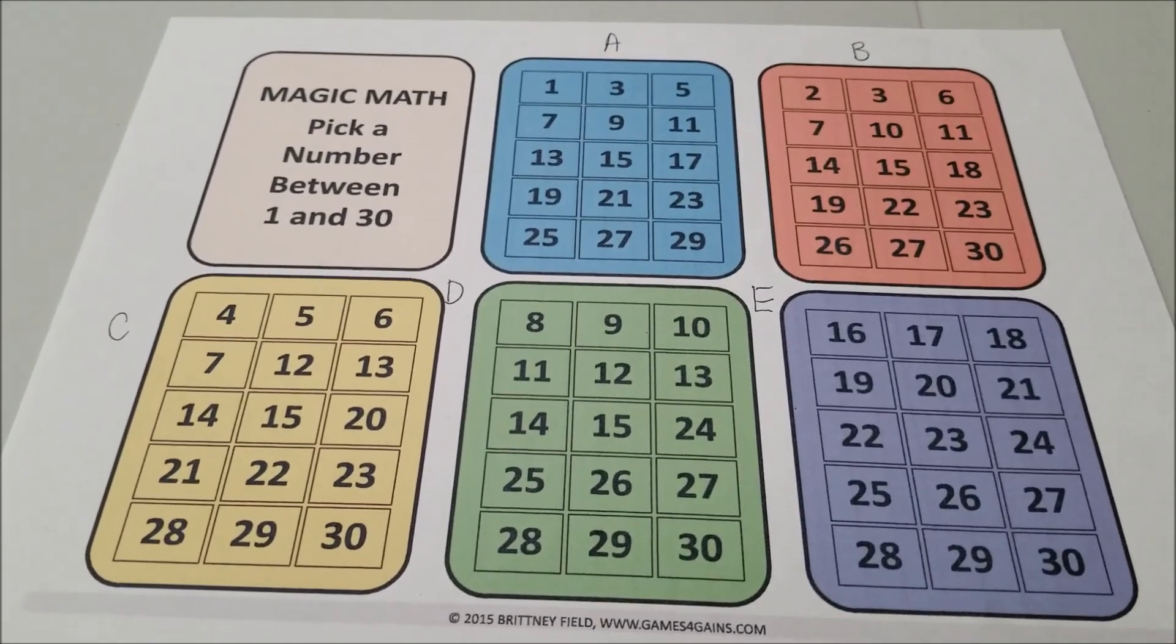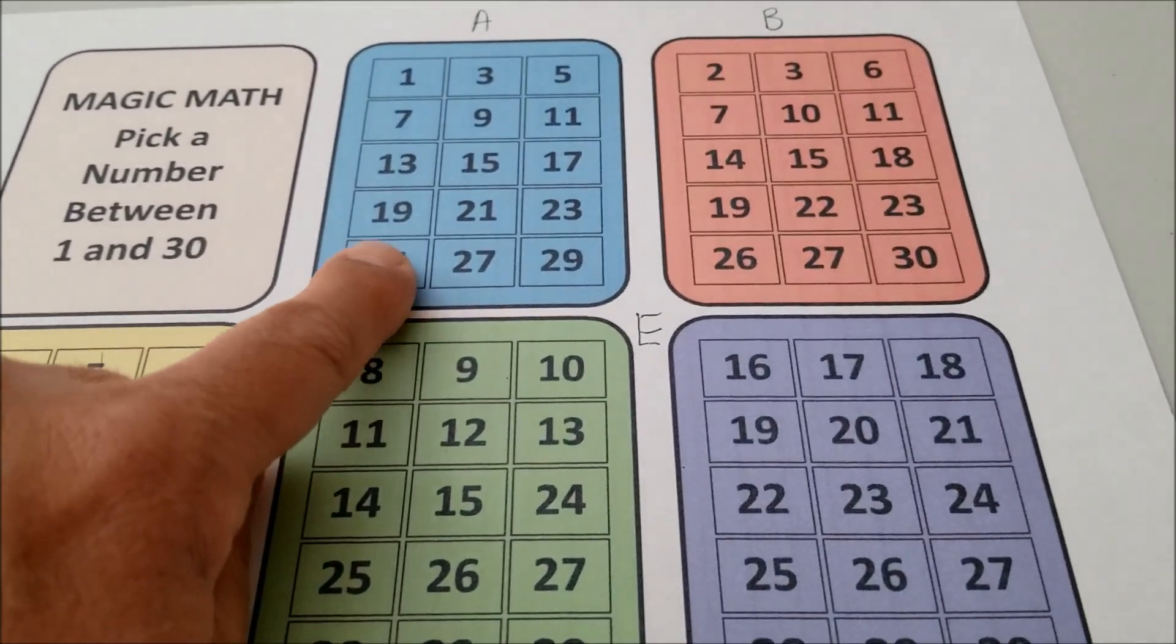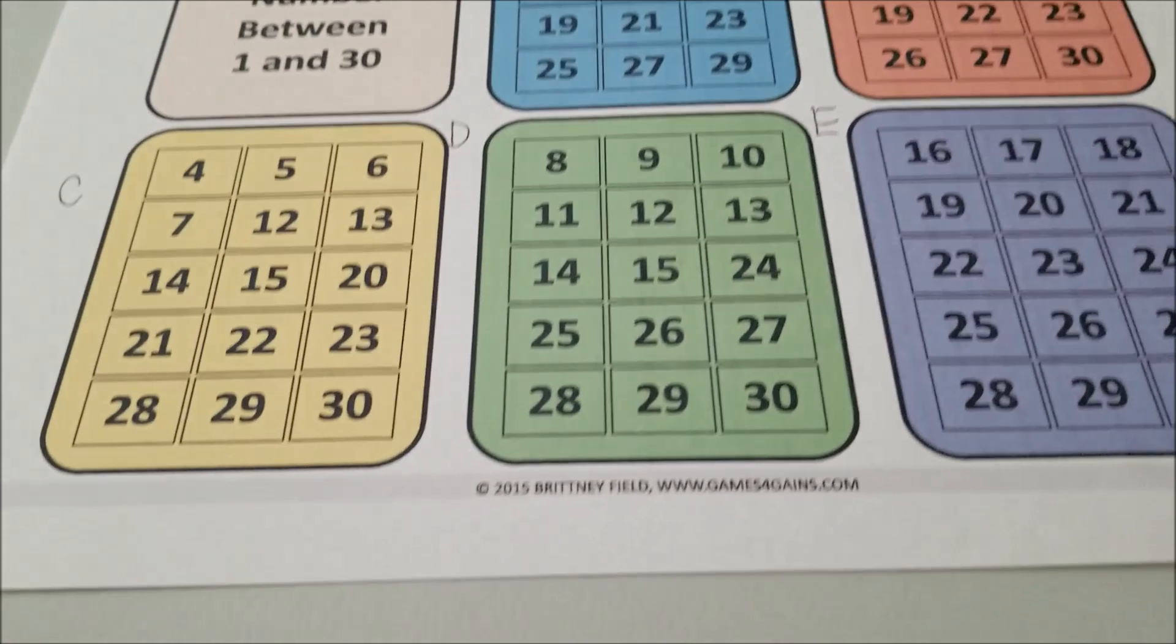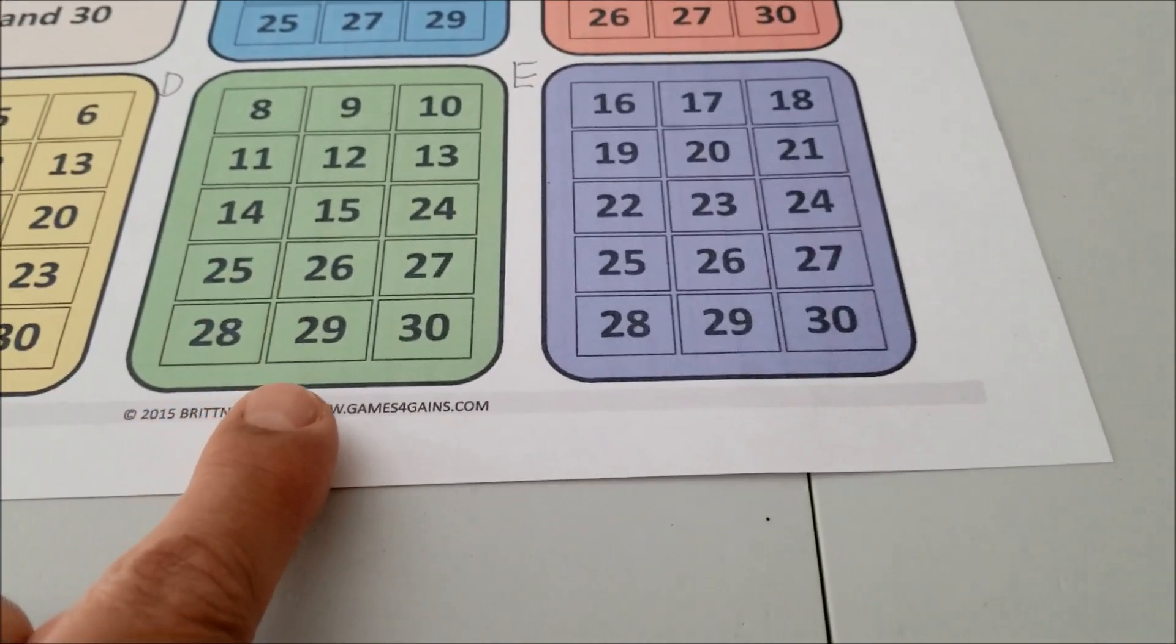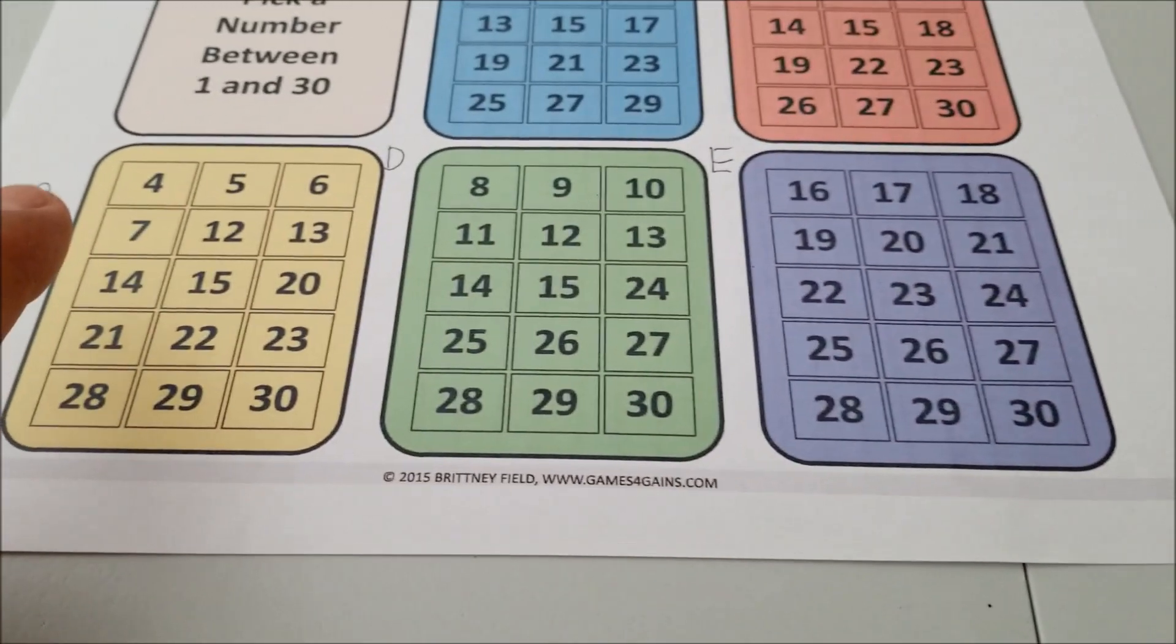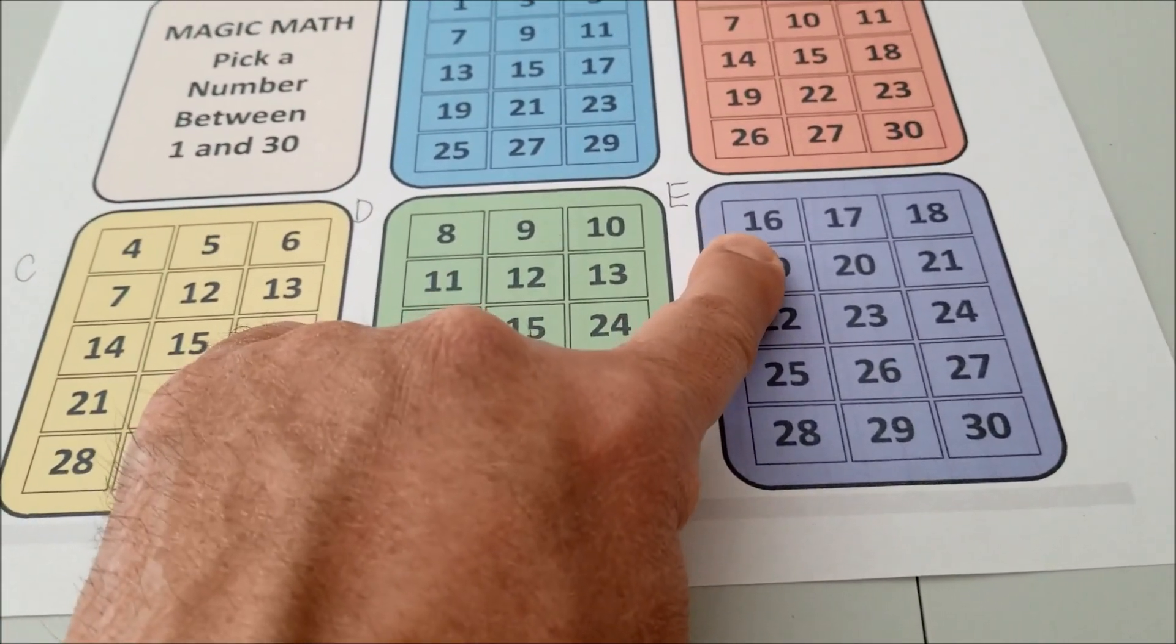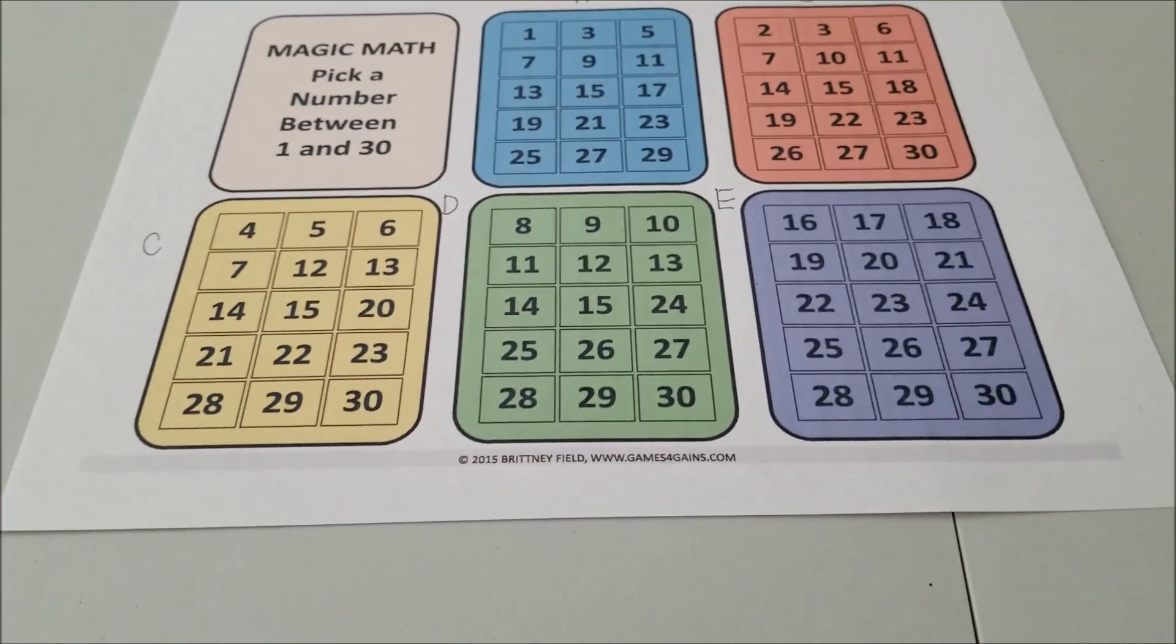So let's try another number just for fun. Let's just try the number 20. Are you guys ready? 20 is not in A. 20 is not in B. 20 is in C. And it's in box E. So it's in boxes E and C. So again, all you have to do is add up the upper left number, 16 plus four. Your magic number was 20.